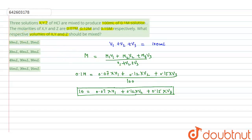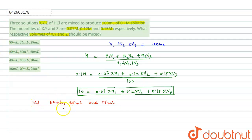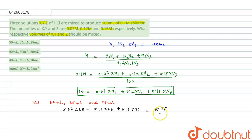We now substitute each option into this equation. For option A, V1=50 mL, V2=25 mL, V3=25 mL: 0.07×50 + 0.12×25 + 0.15×25 = 10.75. This is not equal to 10, so option A is incorrect.